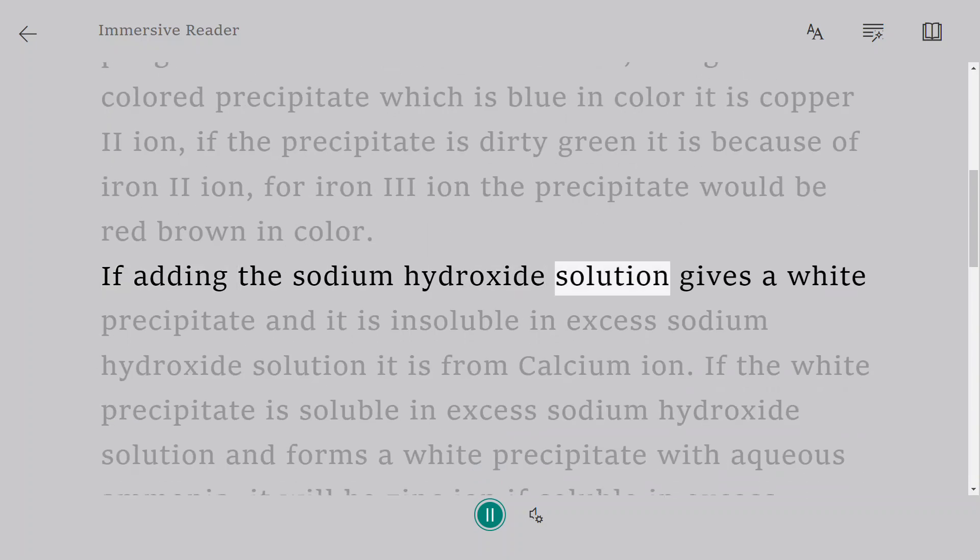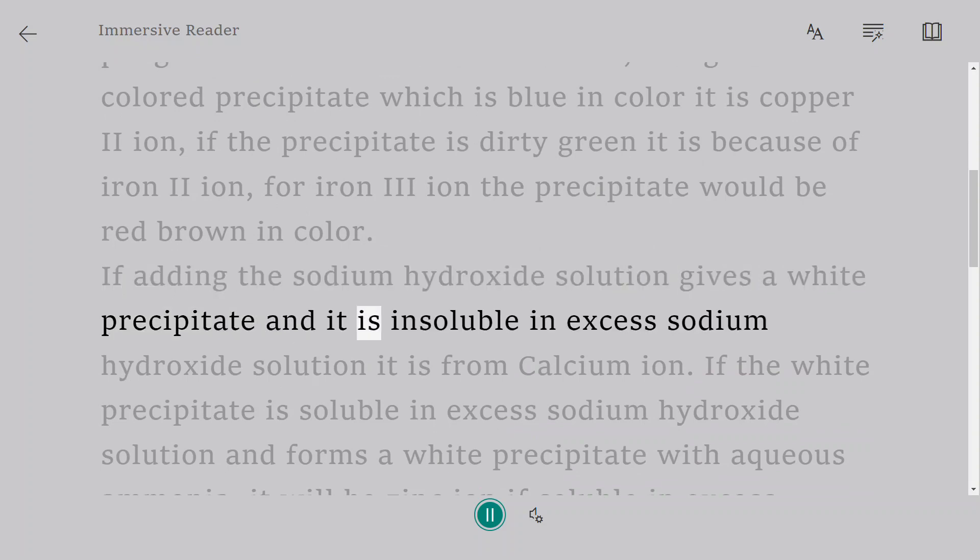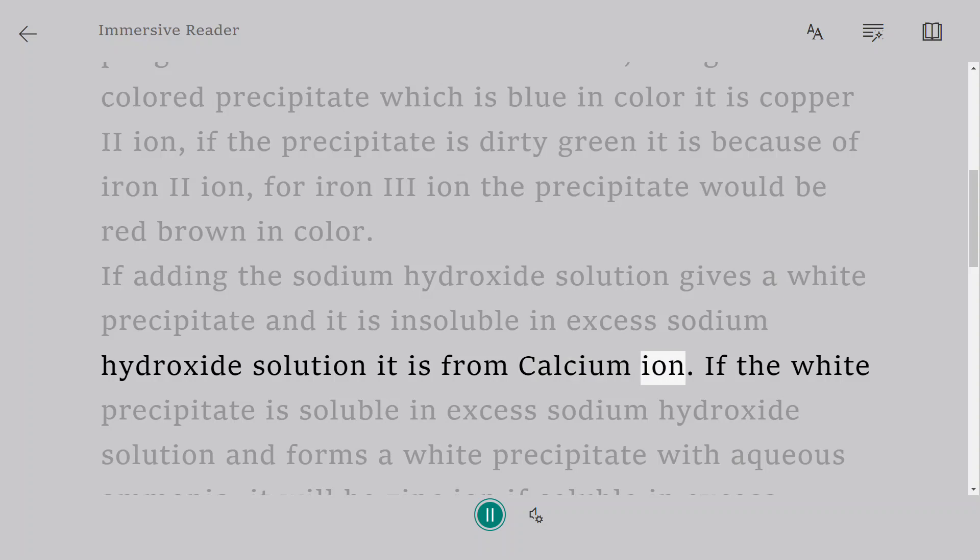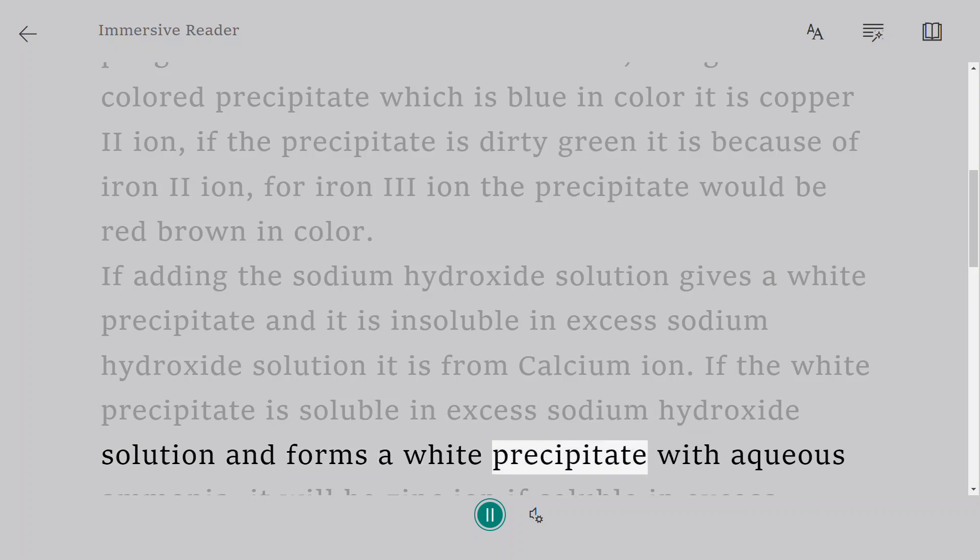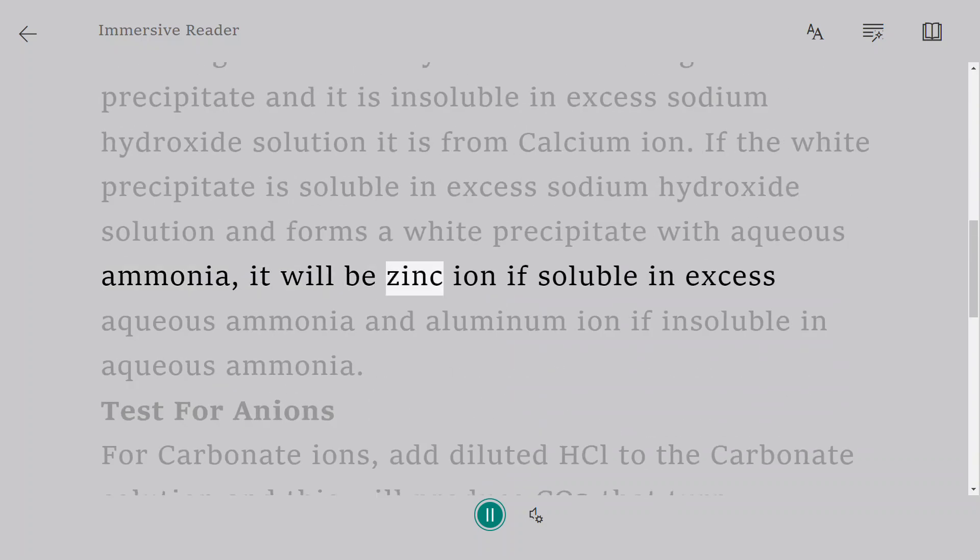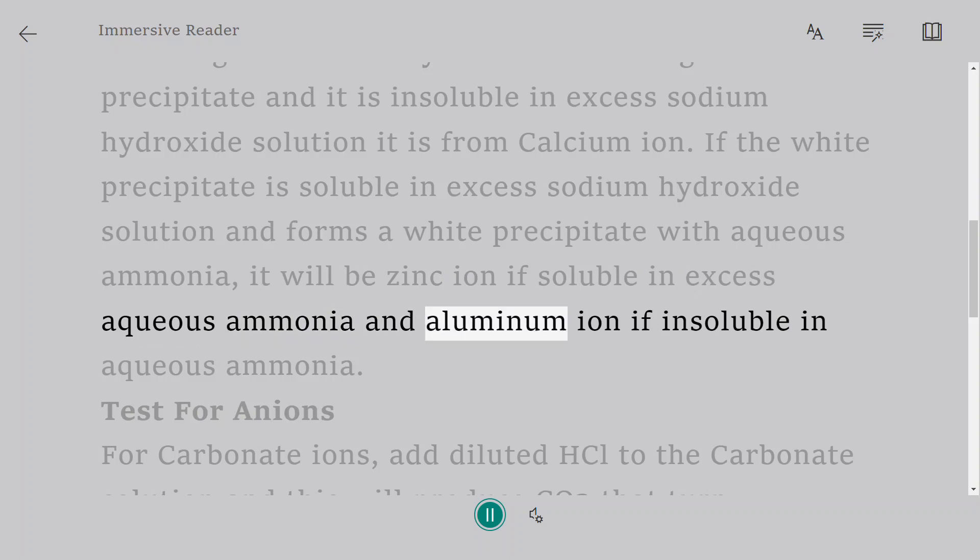If adding the sodium hydroxide solution gives a white precipitate and it is insoluble in excess sodium hydroxide solution, it is from calcium ion. If the white precipitate is soluble in excess sodium hydroxide solution and forms a white precipitate with aqueous ammonia, it will be zinc ion if soluble in excess aqueous ammonia and aluminum ion if insoluble in aqueous ammonia.